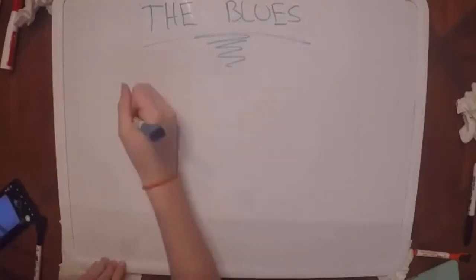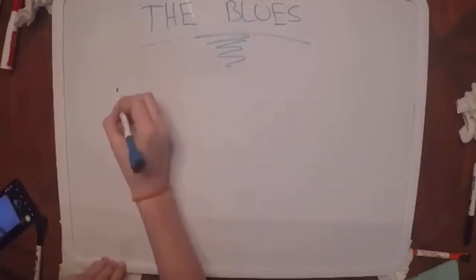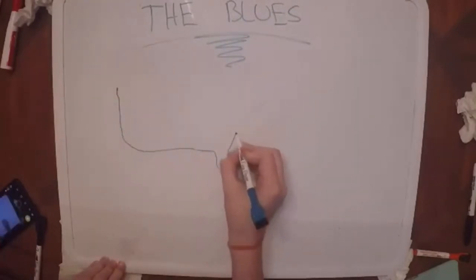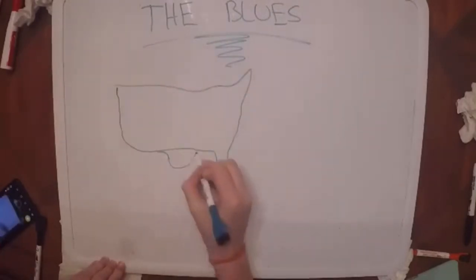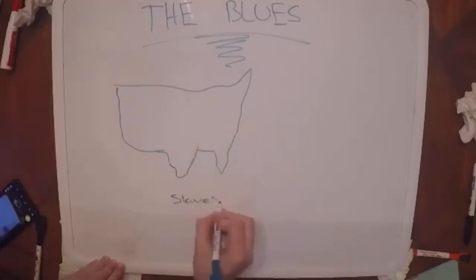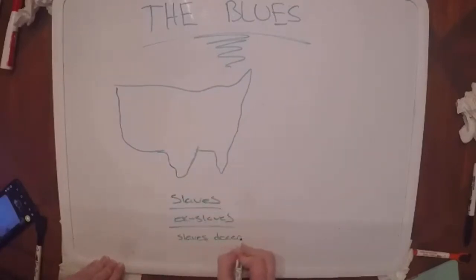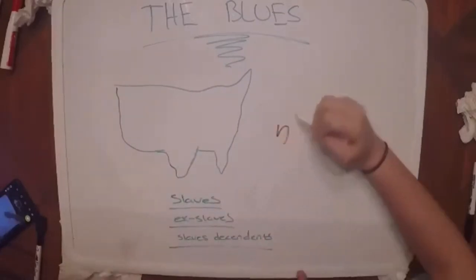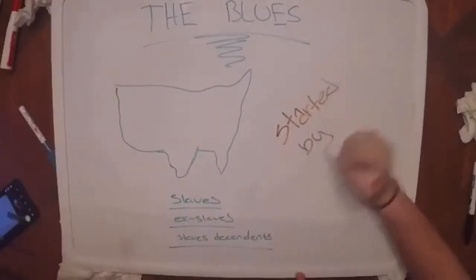The blues started in the mid to late 1800s. The blues wasn't invented by one single person because this form of jazz started in work fields and slave plantations. The blues was a form of music based on emotions, getting over hard times and saying what you feel.